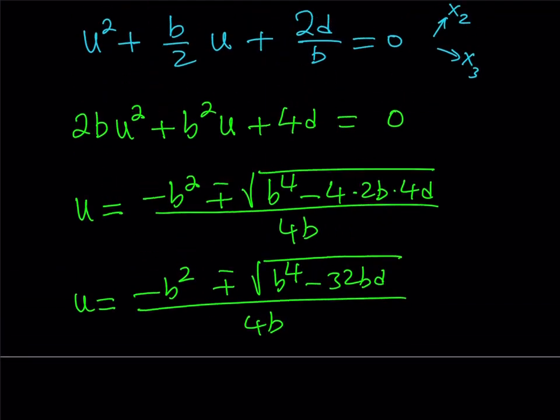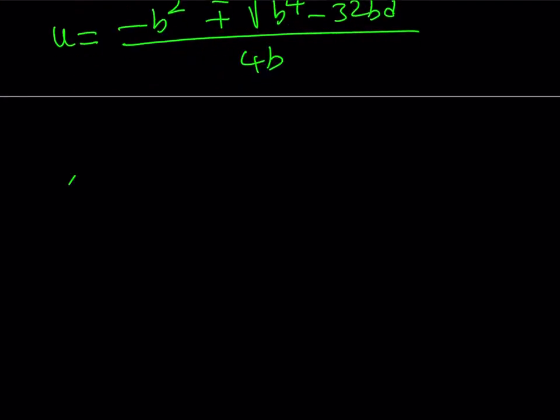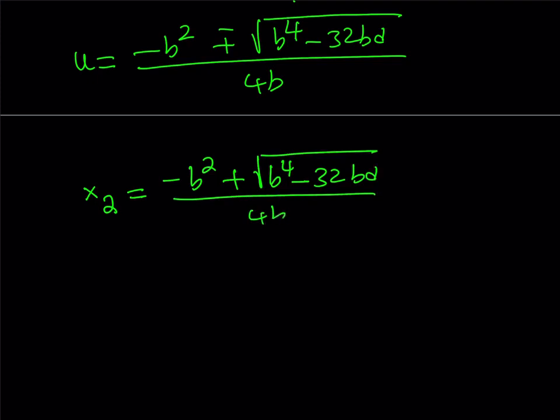So, u represents x2 and x3, so I can just write them separately. And this doesn't matter which one is which, because they could kind of switch around. So, let's just say x2 is the positive one, negative b squared, plus the square root of b to the fourth, minus 32bd, all over 4b. And then x3 is going to be the other one with the minus sign, negative b squared, minus the square root of b to the fourth, minus 32bd, over 4b.